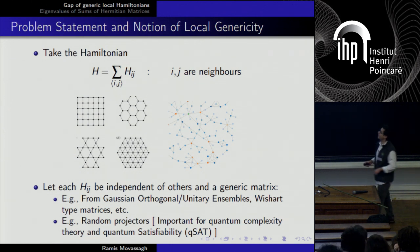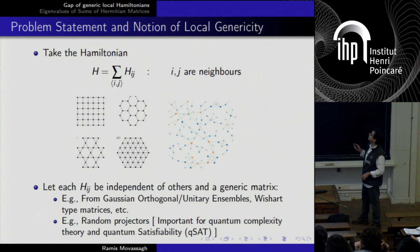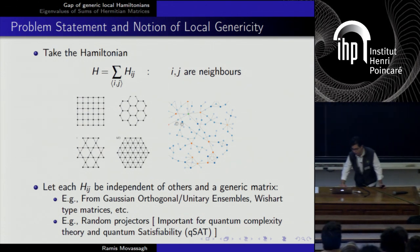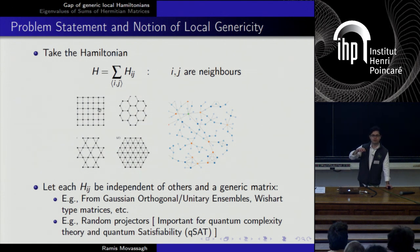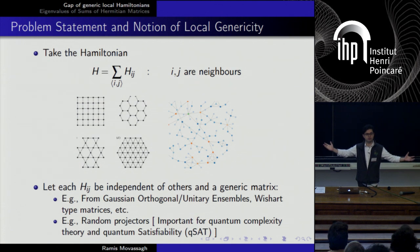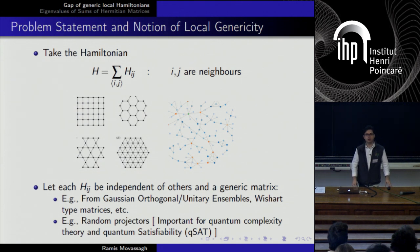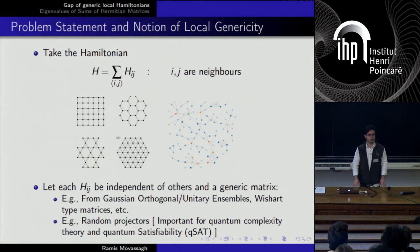The setting is: I have a local Hamiltonian where i, j are nearest neighbors — they don't have to be, it could be k-local, on whatever lattice or graph. But I want to have finite maximum degree; I don't want everybody connected to everybody like a mean field theory. I want to have random local terms, independent of one another, and a notion of locality.